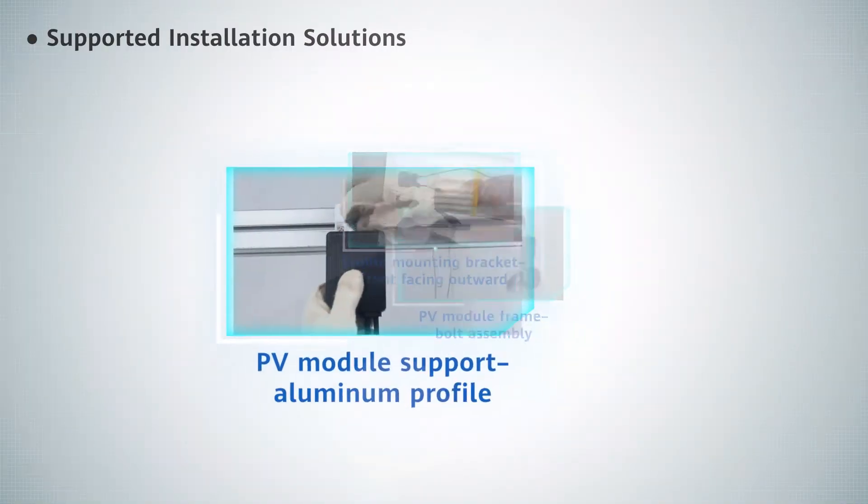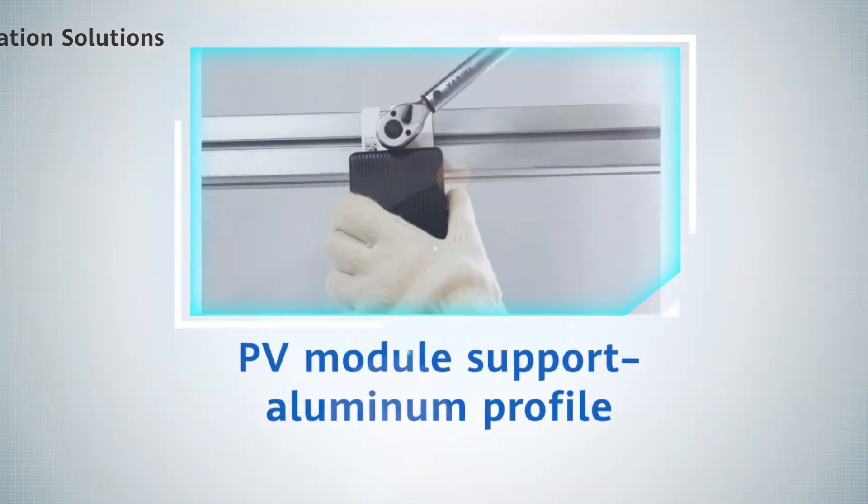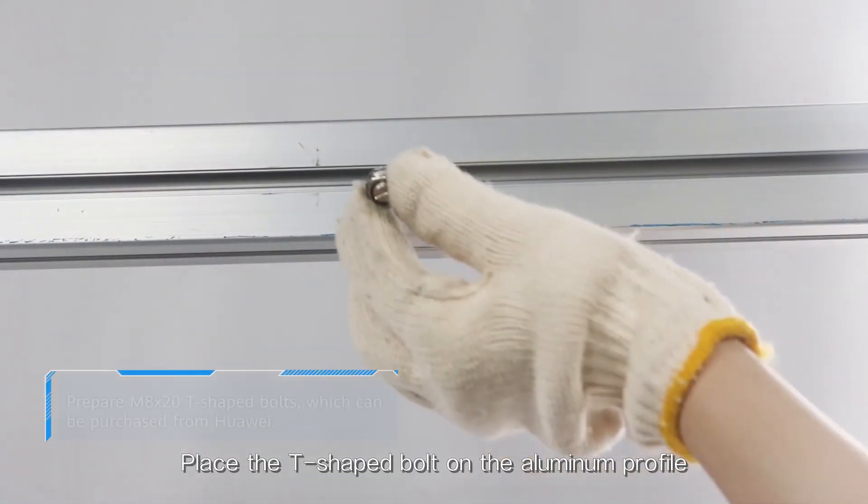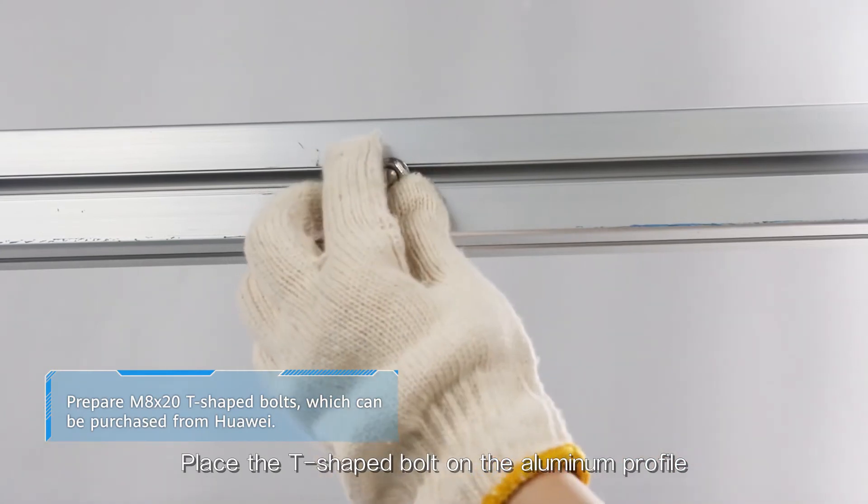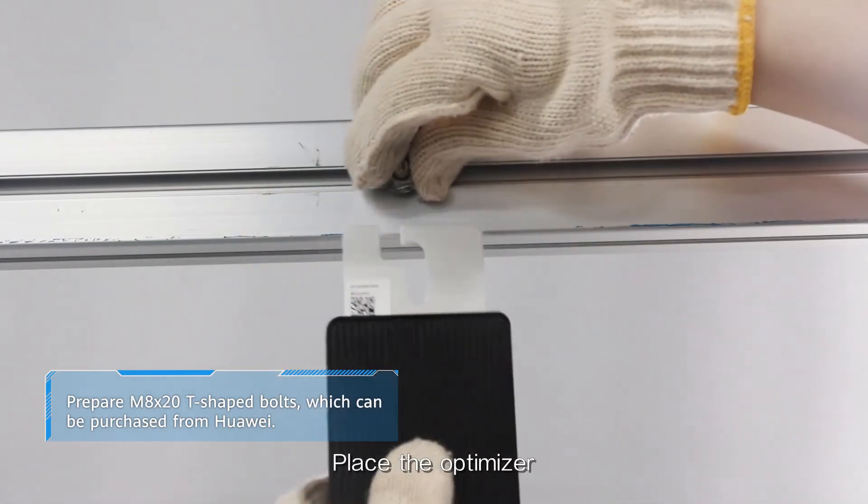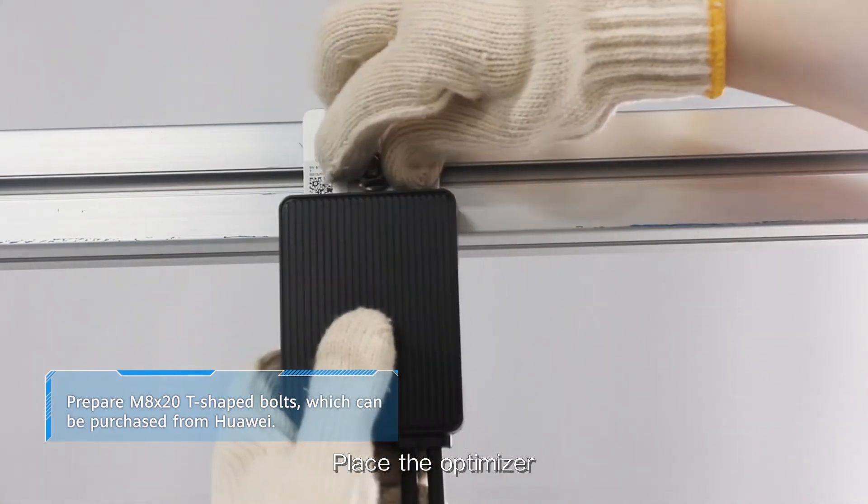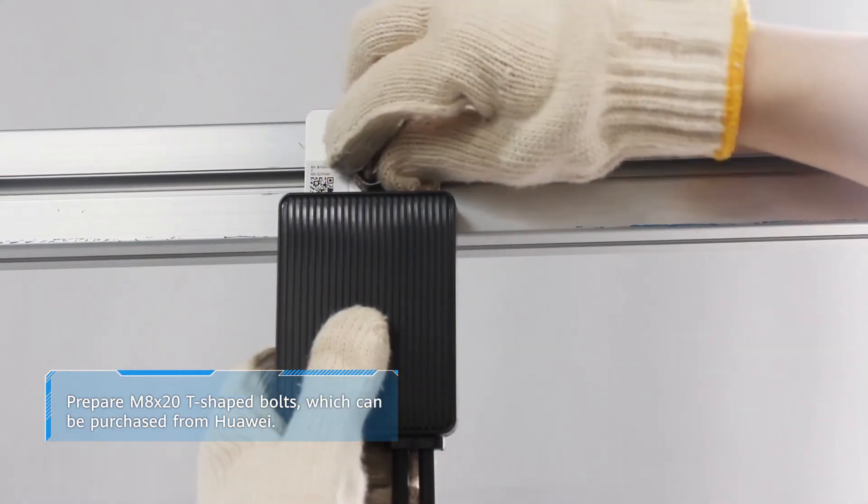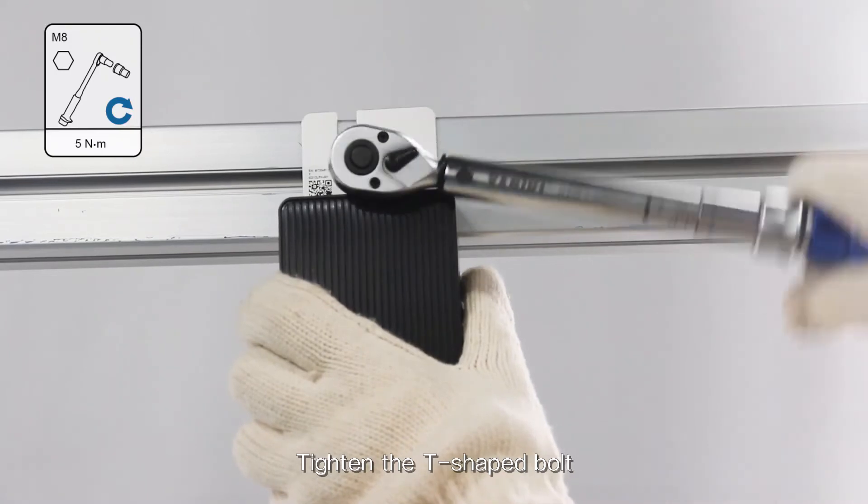PV module support aluminum profile. Place the T-shaped bolt on the aluminum profile. Place the optimizer. Tighten the T-shaped bolt.